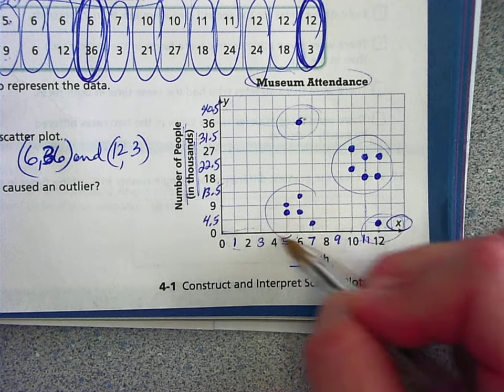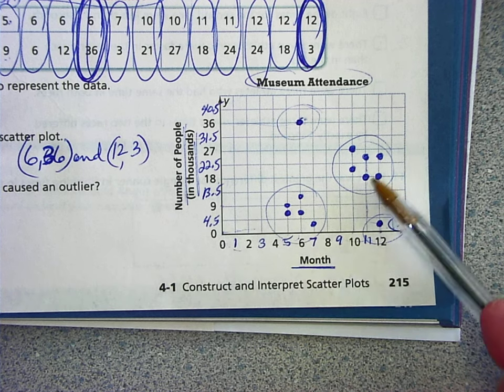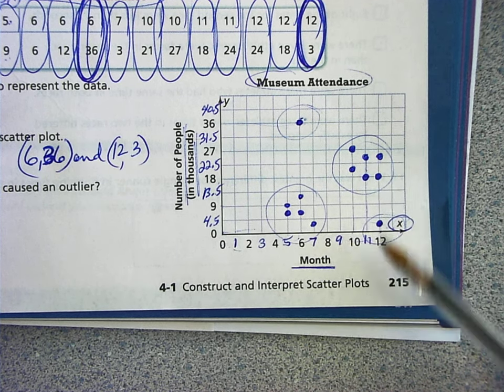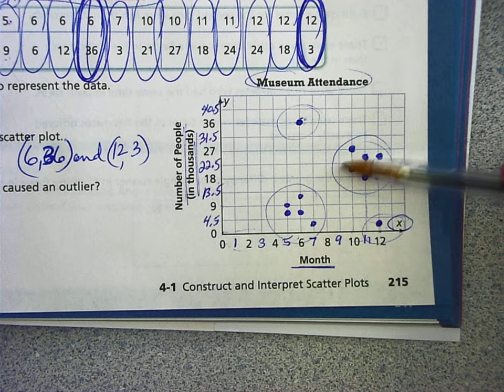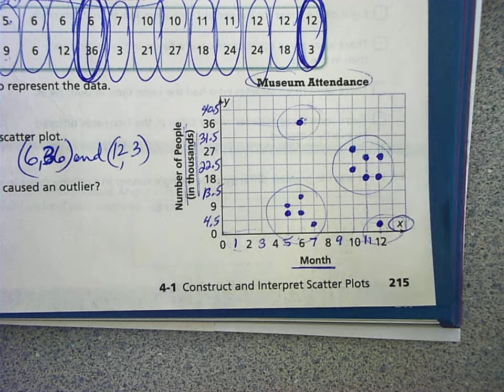Okay. Now, we would call this a cluster and this a cluster. It looks like most of the people came between these months and about this many thousand people.